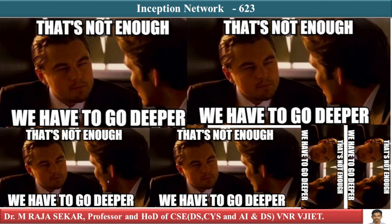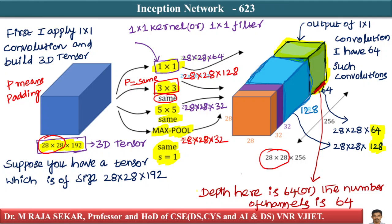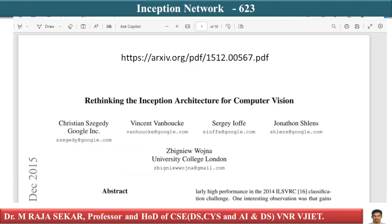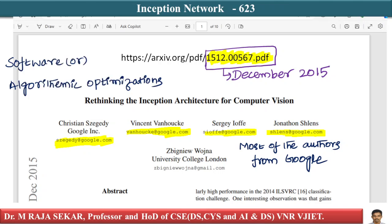Welcome to Raj Shaker Classes on Applied Data Science with Python. This is lecture number 623. In this lecture we will try to understand the Inception Network. This is a research paper from December 2015 — late 2015 and early 2016 — and most of the authors are from Google. Whenever I see a research paper from Google, I expect it to be very high quality, especially in terms of software and algorithmic optimizations, because Google has very good software engineers.